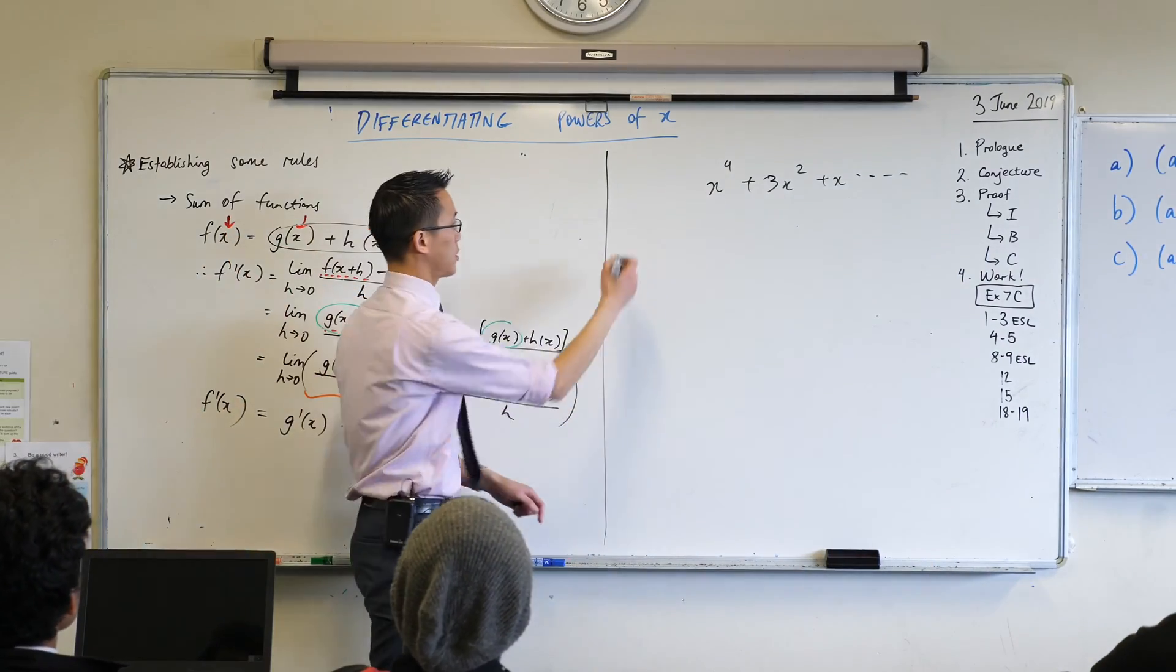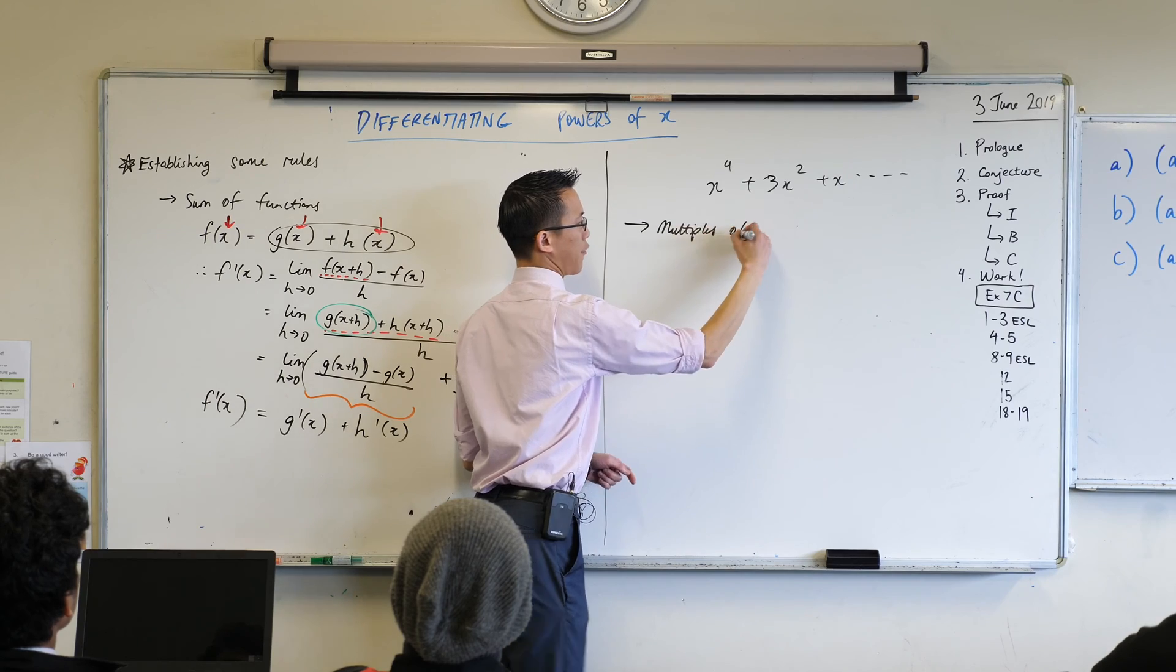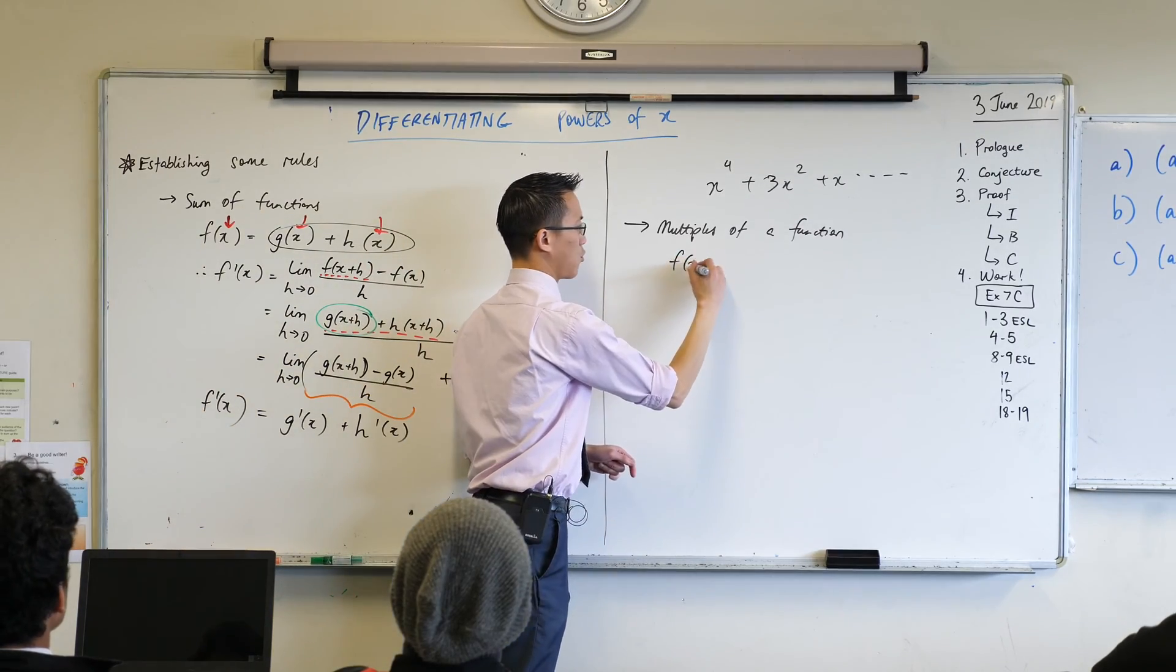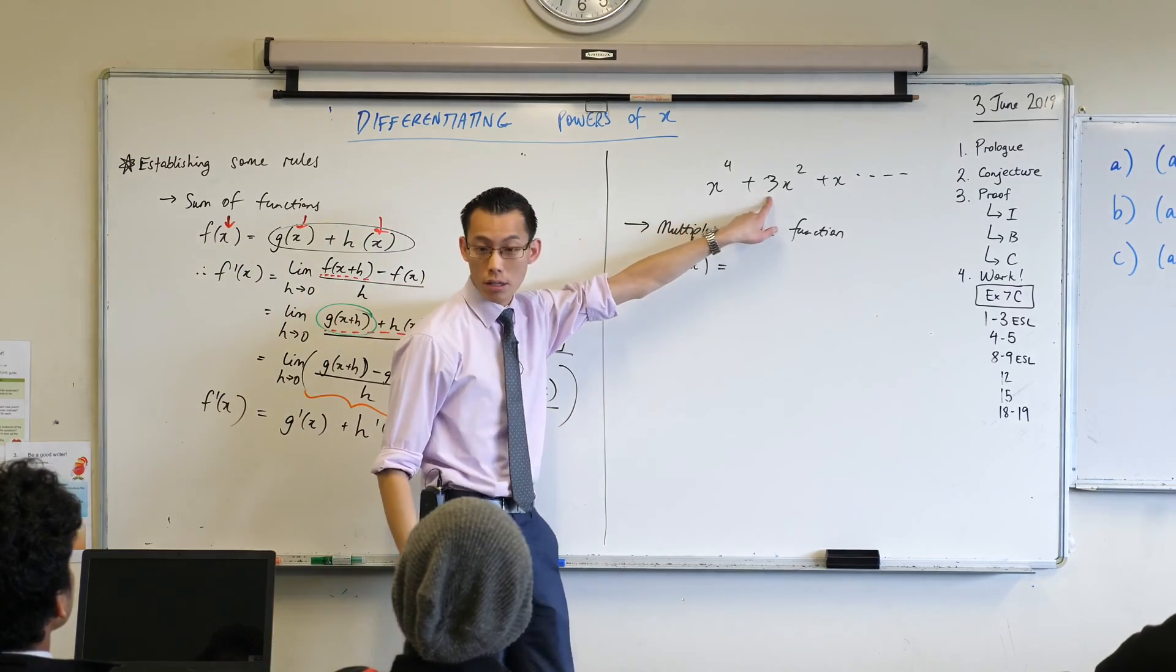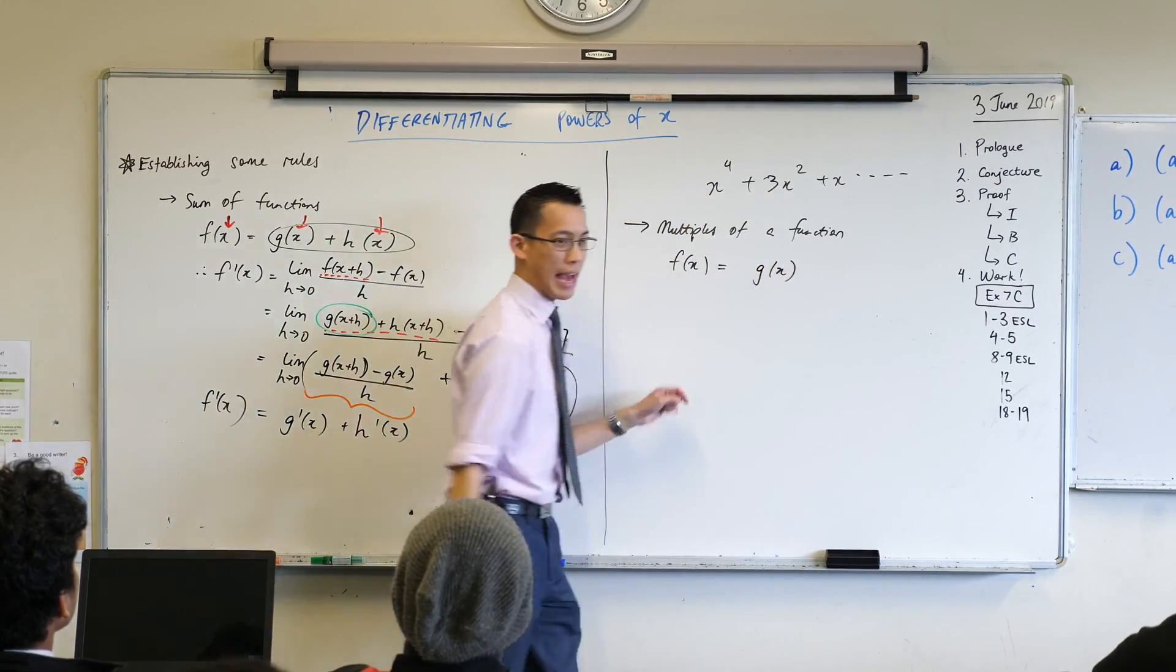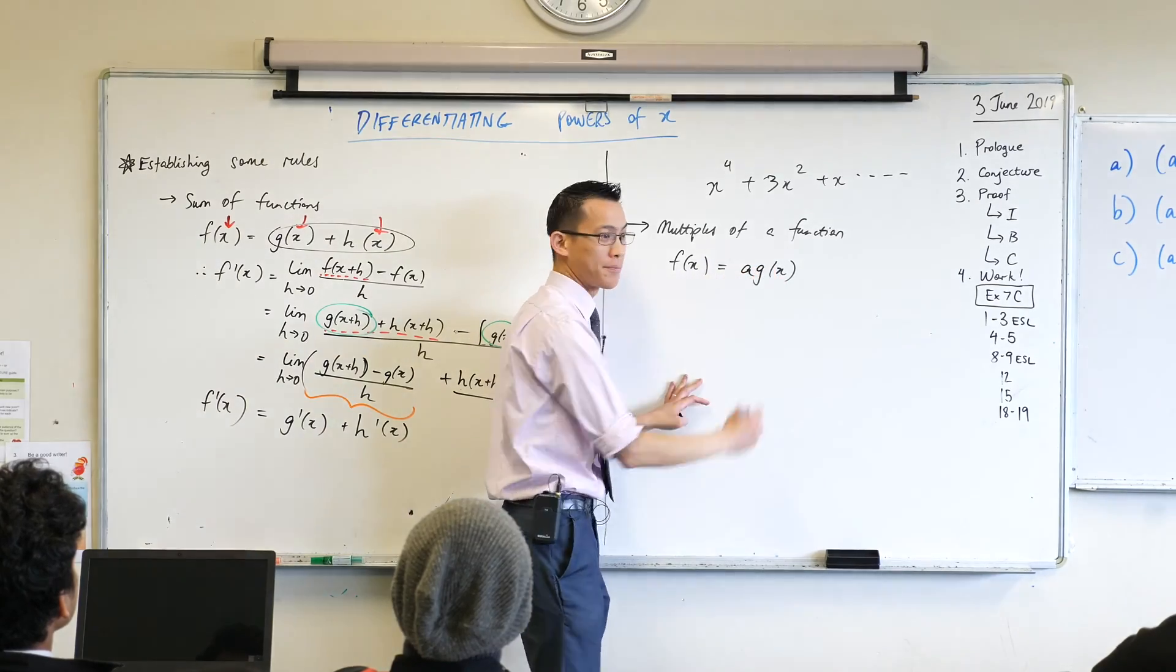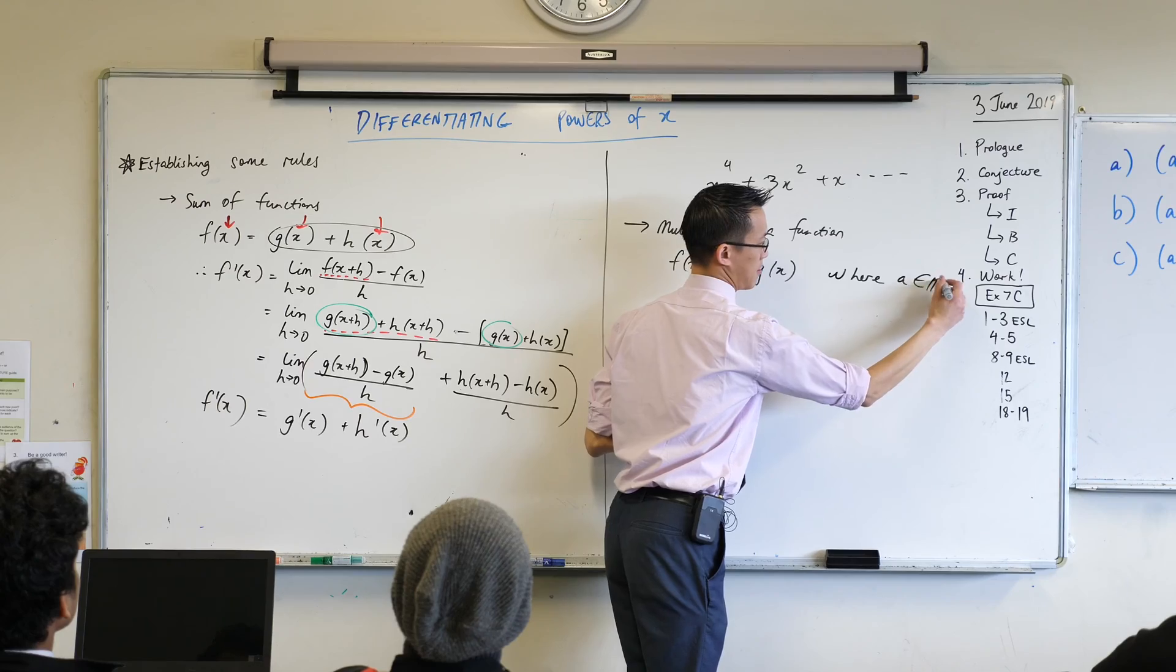If instead of a sum of functions, what if I had multiples of a function? What if I had some function which was just another function multiplied by a constant? So let's call our other function g, and let's call our constant number at the front, it doesn't have to be 3, or 8, or negative 2, let's just call it a, where a is any number you like.